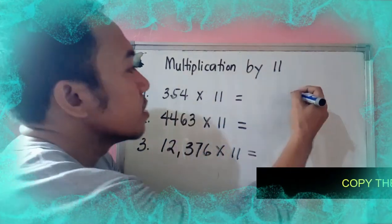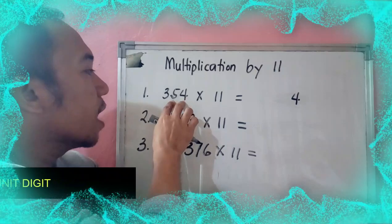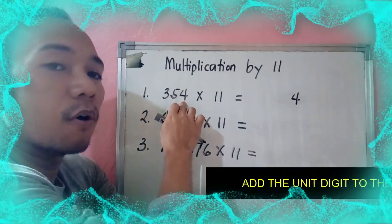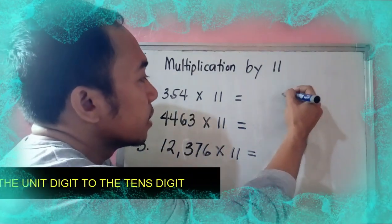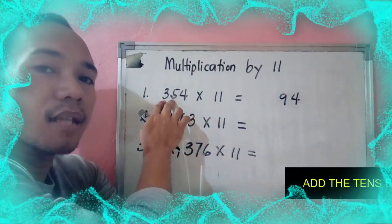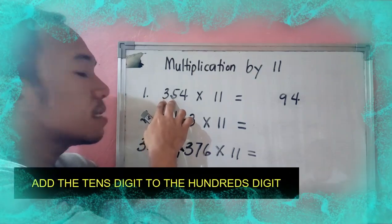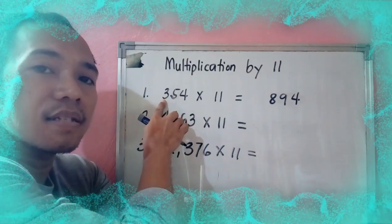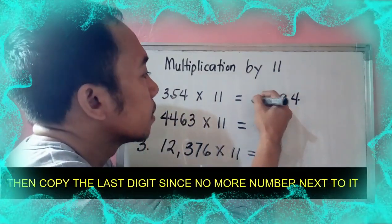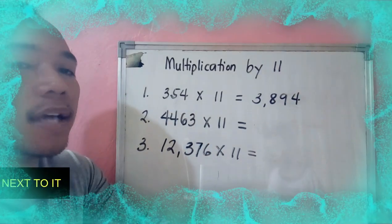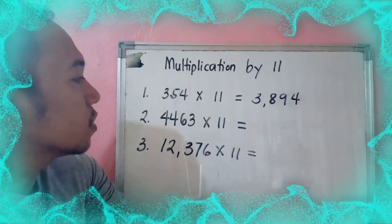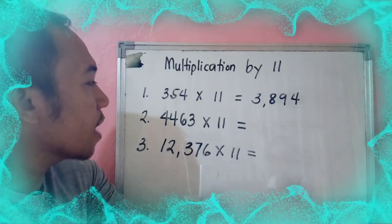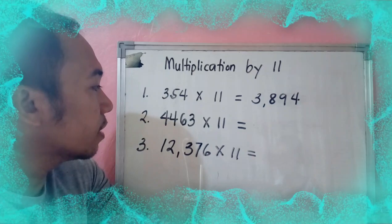copy the unit digit. Then add to its next number: 5 plus 4 is 9. Then add 5 to its next number: 5 plus 3 is 8. Then since 3 doesn't have a next number, just copy. So we have 3,894.